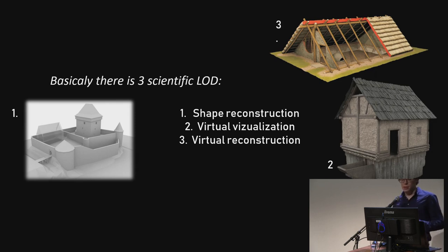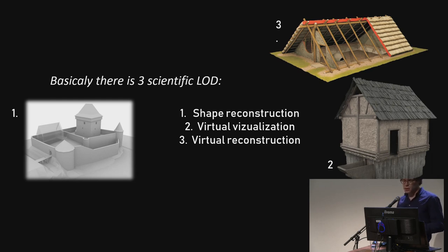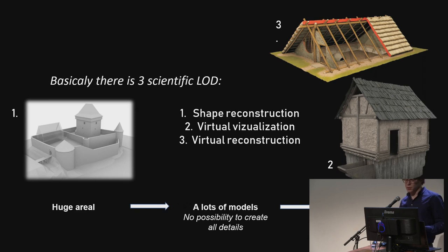In archaeological visualization there are three basic levels of detail in modeling. First is classic shape reconstruction. Second is virtual visualization — it's almost the same as architectural visualization. You have the basic construction, it probably represents how the structure worked, but you couldn't use the 3D model as a plan to rebuild the whole building in the real world — same with materials. Third is virtual reconstruction, where you can take the 3D model and actually build it in the real world. We always use virtual visualization because we're working with huge areas and with only two people it's very hard to recreate everything in full detail.